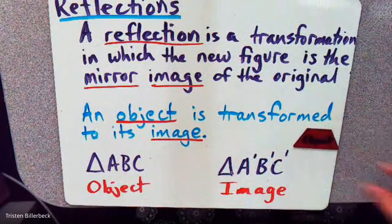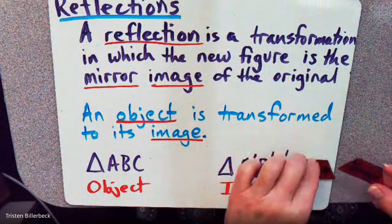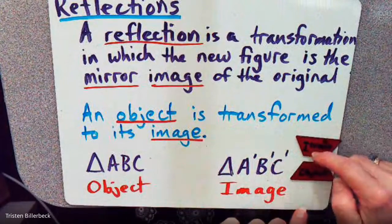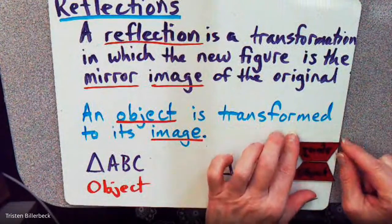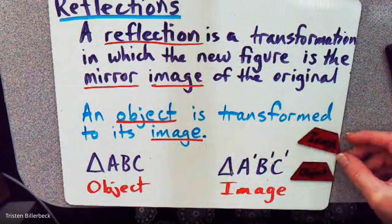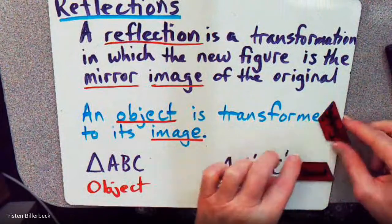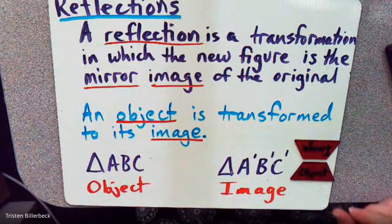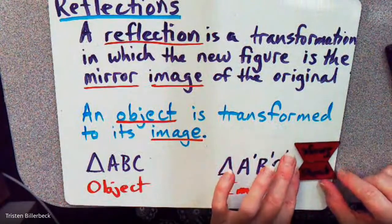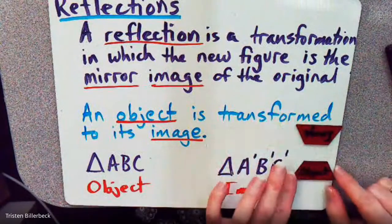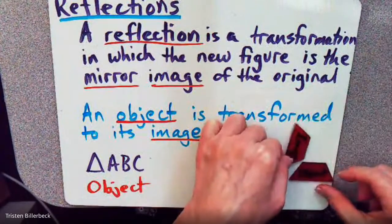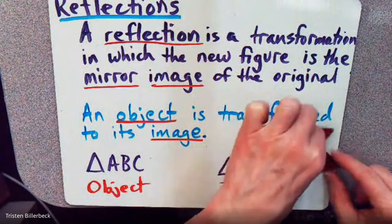If I have an object and I'm going to reflect it, then that is its image — that is the image of this object reflected. We can reflect it right on the side or we can reflect it farther apart. It can be reflected in other ways too, at different angles. So that's an object and that's a reflection.